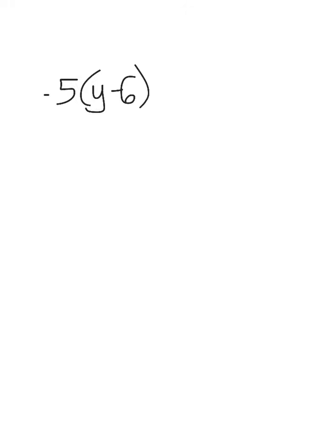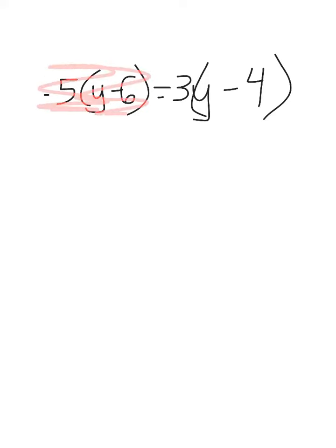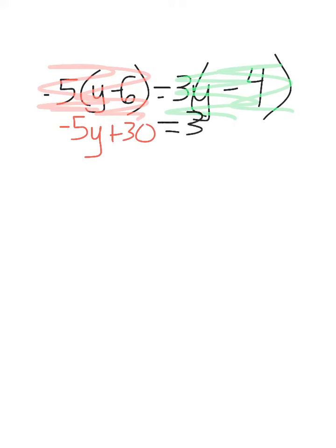So let's say I have negative 5 times y minus 6 equals 3 times y minus 4. Once again, I'm looking for the distributive property — I have it on both sides. So I need to distribute on the left: negative 5 times 1y gives me negative 5y, and negative 5 times negative 6 is positive 30. That will equal 3 times y is 3y, and 3 times negative 4 is negative 12.